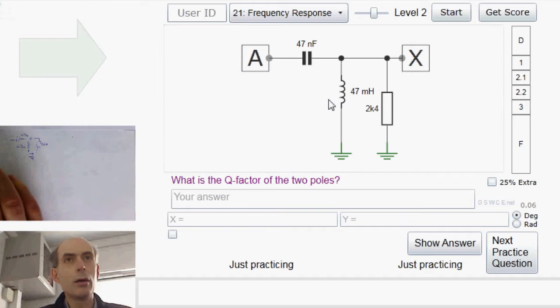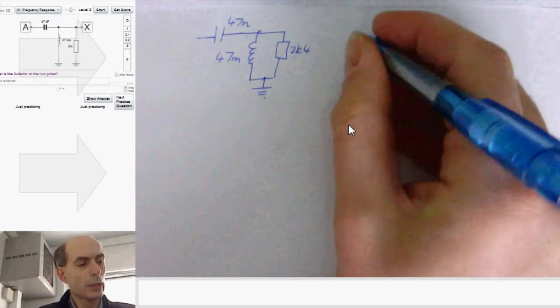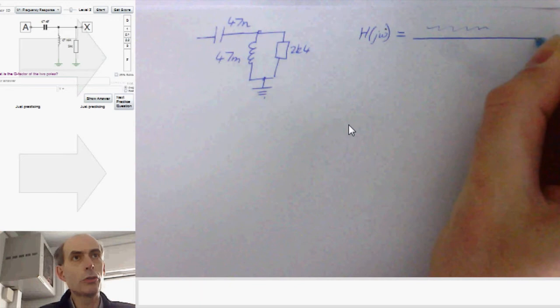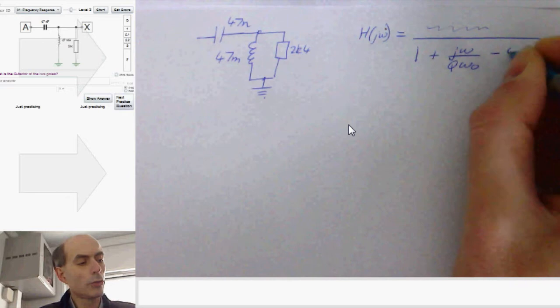Now, the standard form for a second-order response, and this is a second-order response because we have two reactive components, a capacitor and an inductor, is something of the form H(jω) is some numerator on the top, which we don't know and we don't really care about because we're just being asked about the poles, divided by the standard form of 1 plus jω over Qω₀ minus ω² over ω₀ squared.